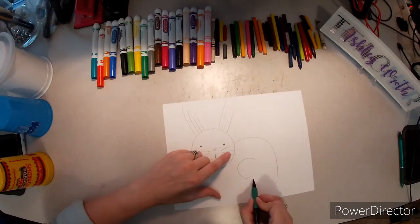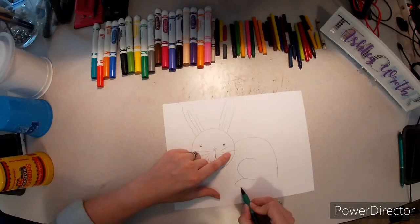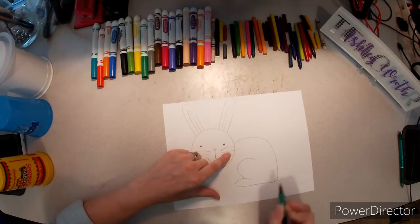Now we are going to scooch over on the curve. We are going to go out and around, and we are going to curve up to there. This is his foot.